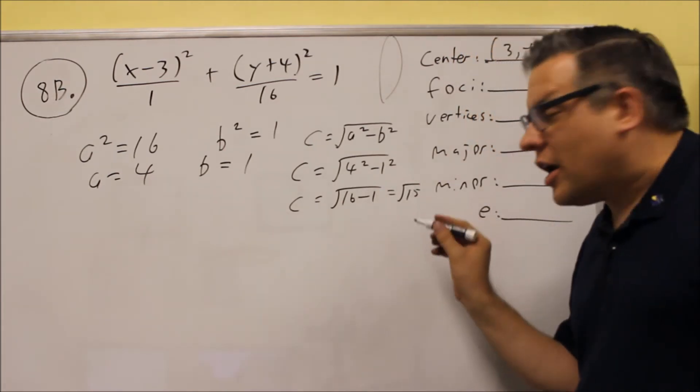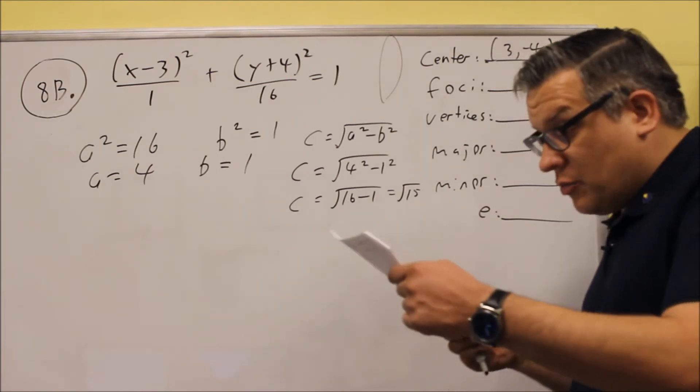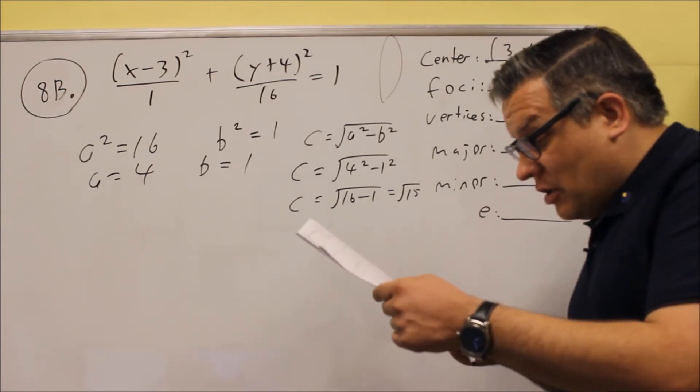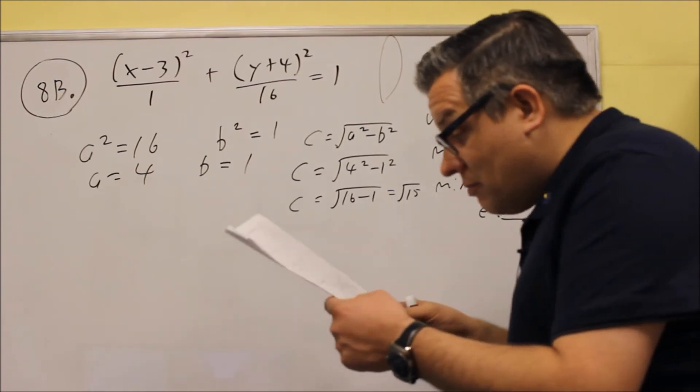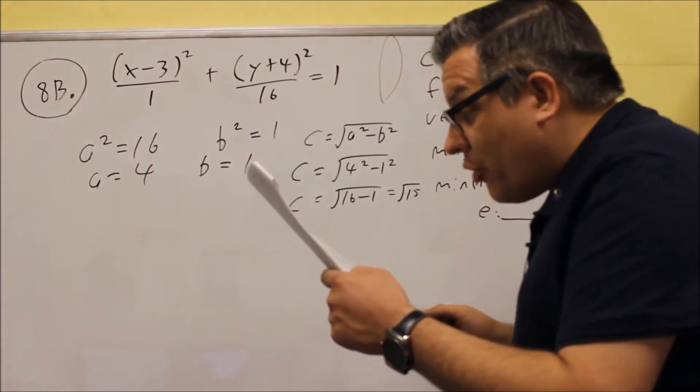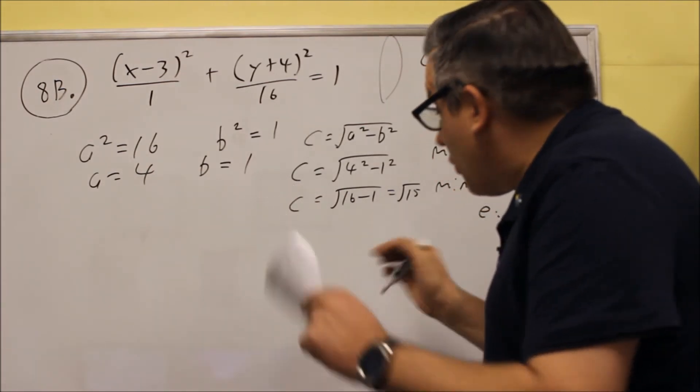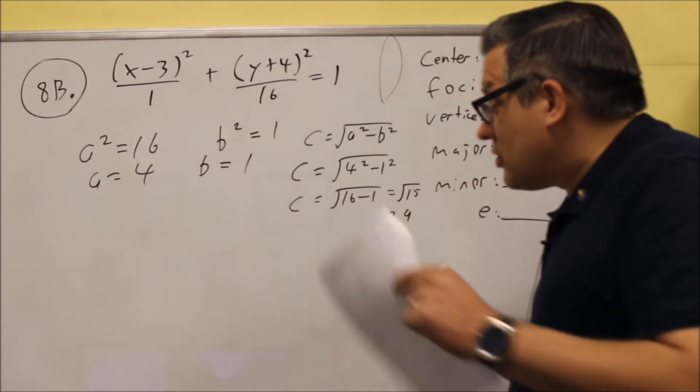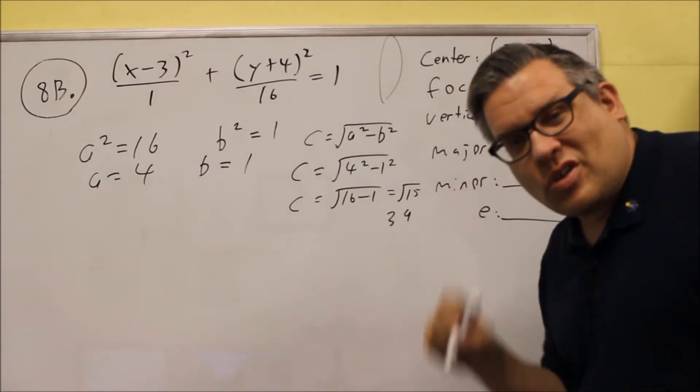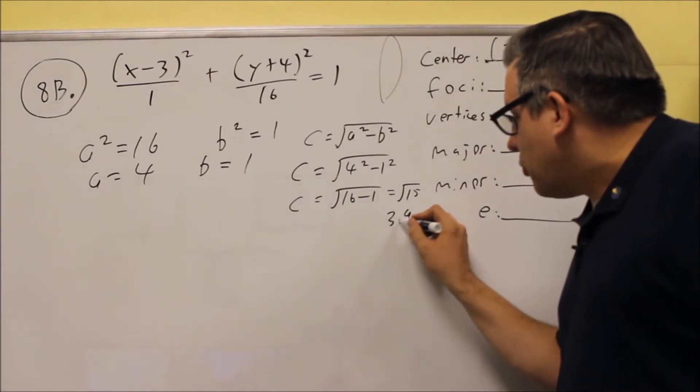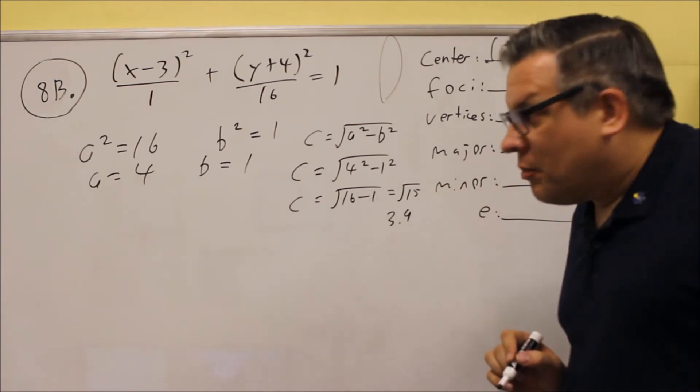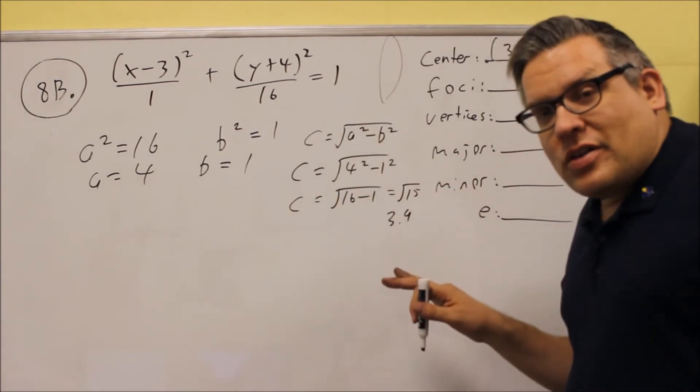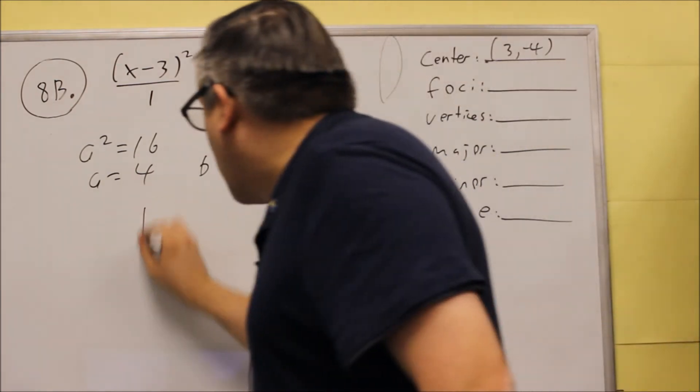Now the square root of 15 does not reduce down anymore in that case. And so that's about 3.9 approximately is what it is. It's a little bit less than 4 because the square root of 16 would be 4. So 3.9 would be the decimal equivalent. Now we have a, b, and c. We're ready to graph this one.